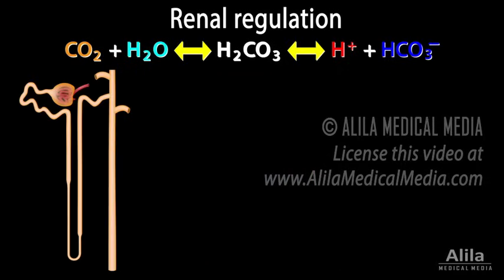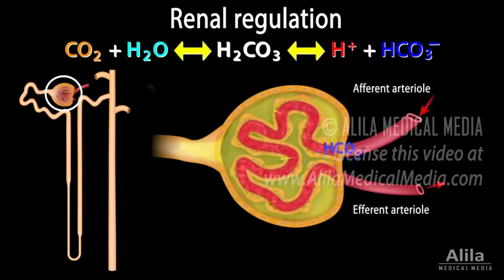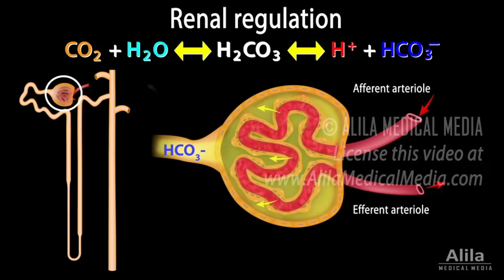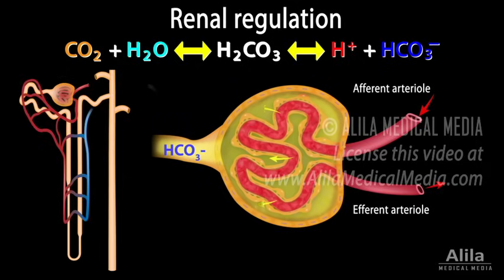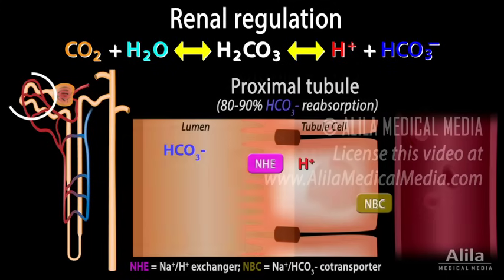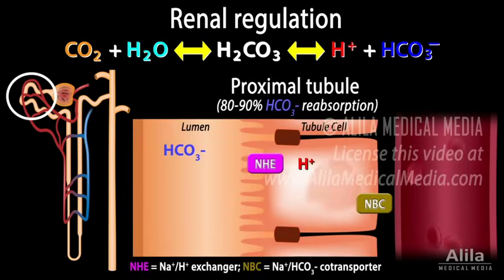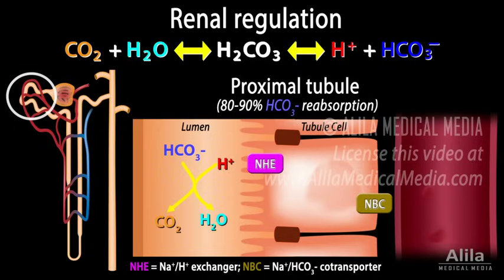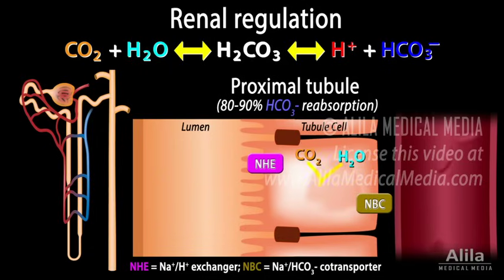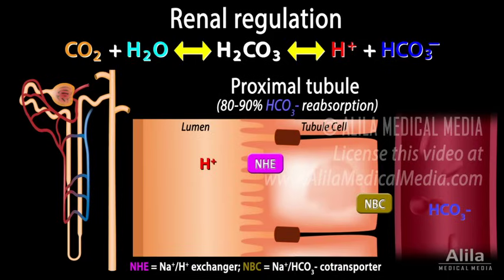Although all of the plasma bicarbonate is filtered in the glomerulus during the first step of urine formation, virtually all of it is reabsorbed back into the blood. Most of this reabsorption happens in the proximal tubule. The amount of reabsorbed bicarbonate in the proximal tubule is regulated via a number of mechanisms in response to changes in blood pH — it increases during acid loads and decreases during alkali loads.